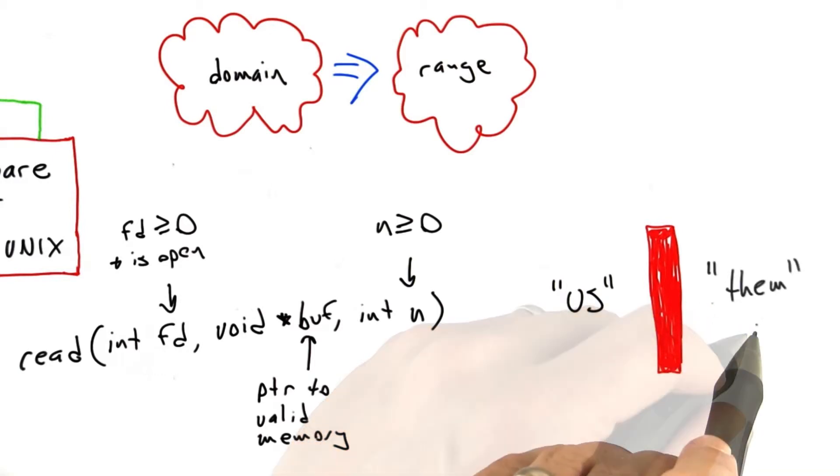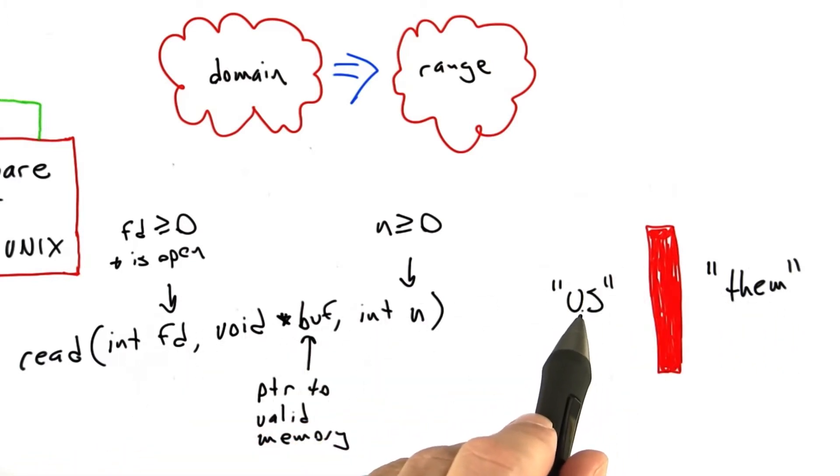On the other side of the boundary, we have them. These are our users. And our users might not actually be malicious. They might only be writing buggy code. But the point is, regardless of whether the users of the operating system are malicious or just writing buggy code, they're going to invoke system calls like read with crazy arguments, with all sorts of invalid arguments, and the operating system better not malfunction when this happens.